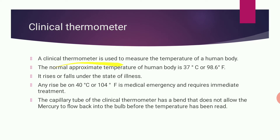Clinical thermometer is used to measure the temperature of the human body, used in hospitals or homes. The normal body temperature is 37 degrees centigrade or 98.6 degrees Fahrenheit. If the temperature rises above this range, medical emergency may be required. The capillary tube of the clinical thermometer has a bend near the bulb which does not allow the mercury to flow back, so the reading is preserved.